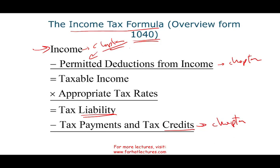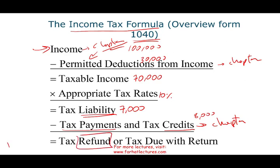Let's work some numbers quickly. If we start with $100,000 of income and are permitted to deduct $30,000, our taxable income is $70,000. Assuming a tax rate of 10% just for illustration, our tax liability is $7,000. If we have tax payments from our W-2 and tax credits worth $8,000, we have a refund of $1,000 — we were responsible for $7,000 but overpaid.